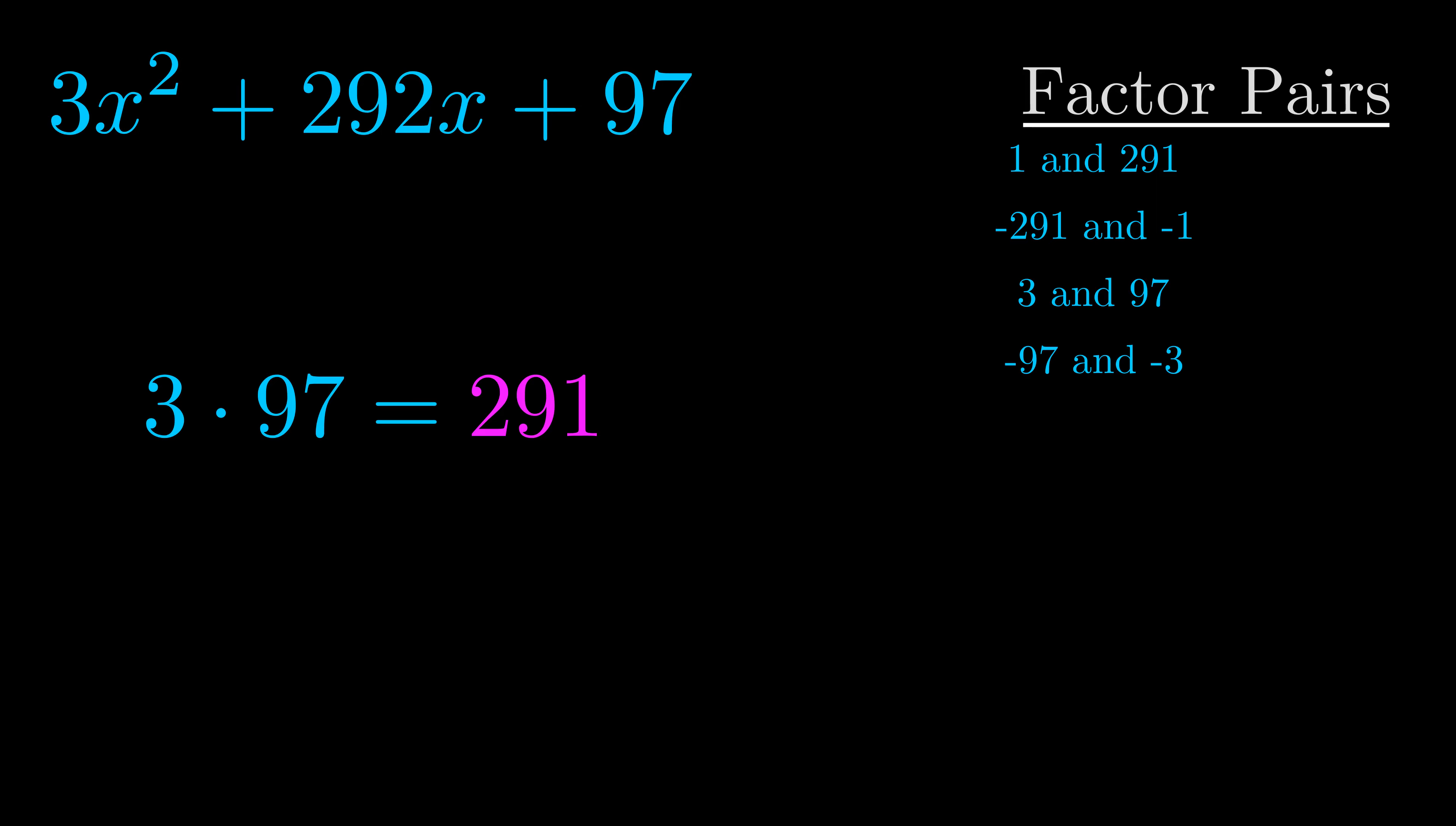The b value is the coefficient on the x term. That's the middle term, the one that we haven't done anything with yet. And really this is the only factor pair that we need.